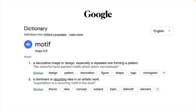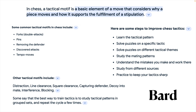You can go a step further and ask Google Bard, but I totally don't agree with its definition — 'a basic element of a move that considers why a piece moves and how it supports the fulfillment of a stipulation' is not very useful. Not everything is bad though: it does mention typical tactical motifs like tempo moves, steps to improve your chess tactics, and the idea of studying tactical patterns in a group set and repeating the cycle a few times — some good, some bad.